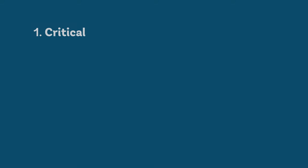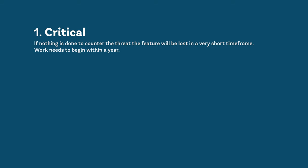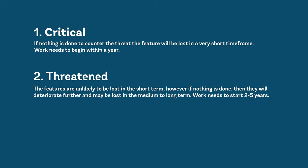Critical: if nothing is done to counter the threat, the feature will be lost in a very short timeframe — work needs to begin within a year. Threatened: the features are unlikely to be lost in the short term; however, if nothing is done, they will deteriorate further and may be lost in the medium to long term — work needs to start in 2 to 5 years.